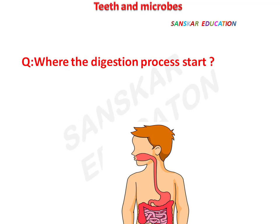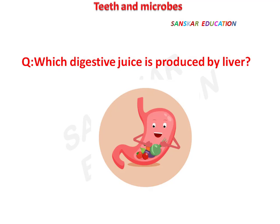Where does the digestion process start? Answer: in the mouth. Which digestive juice is produced by the liver? Answer: bile.